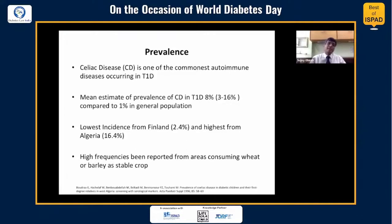Even in India, if you look at the eastern part of India where I come from, celiac is rather uncommon — we get about 2–3% at the most. Whereas if you look at Western India and Northern India, celiac is very, very common. High frequency has been reported from areas consuming wheat or barley as staple crops, which could explain the pattern in India as well, because eastern India predominantly consumes rice and not wheat or barley.